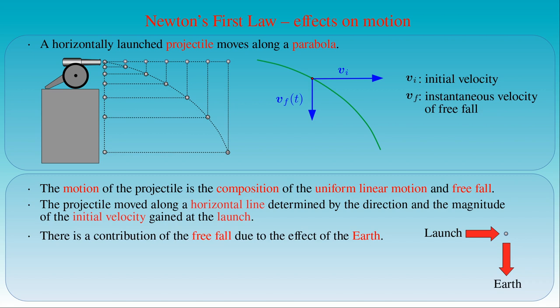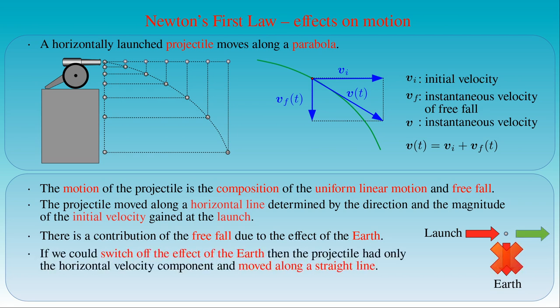As a result, the vector sum of the initial velocity and the velocity gained from free fall gives the instantaneous velocity of the projectile, which is the tangent to the parabolic trajectory. We can assume that if we could switch off the effect of earth's presence, the projectile would have only the initial velocity in the horizontal direction and move along a straight line. In fact, this condition holds in space far from any star or planet. Based on these findings we can state the following axiom, which is called Newton's first law of motion.